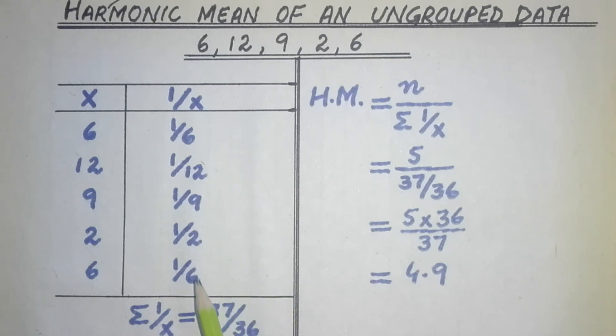After completing this column, we add all values of 1 over x to find sigma 1 over x. After completing this table, we apply the formula which is HM equals n over sigma 1 over x.